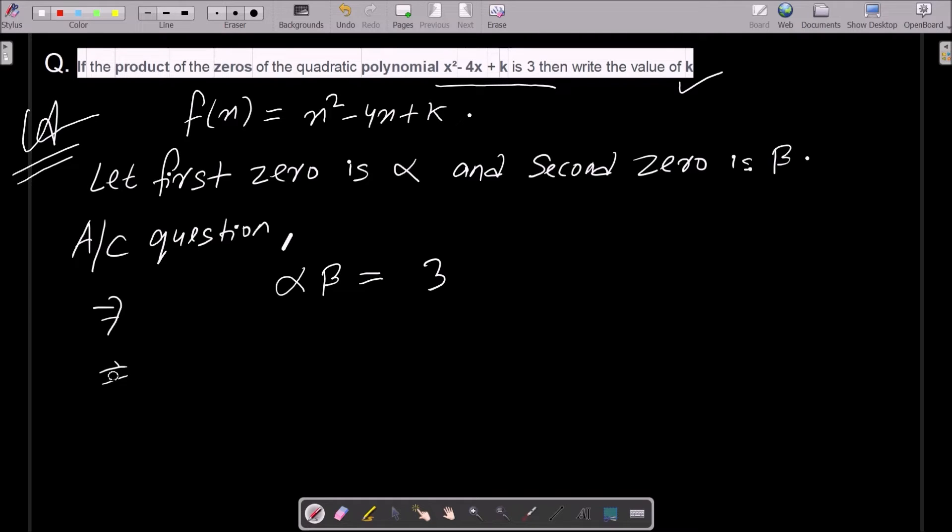Now, α × β can be written as the constant term divided by the coefficient of x².